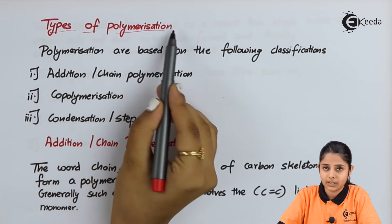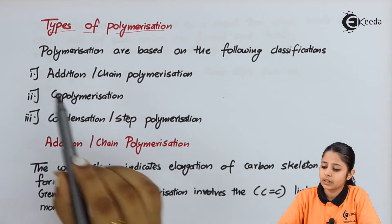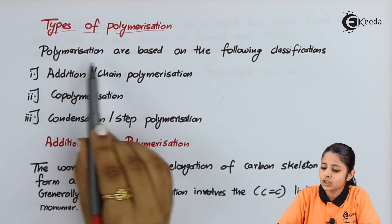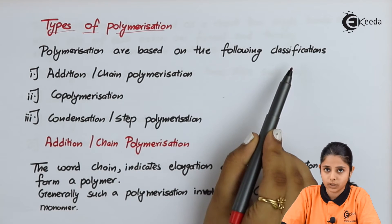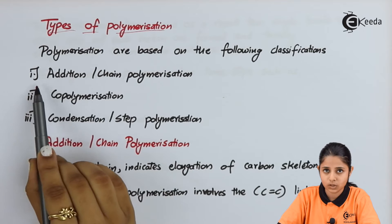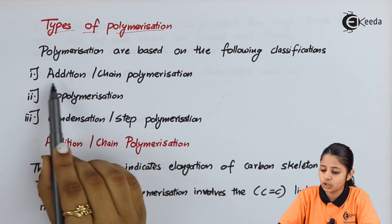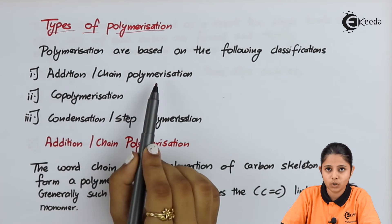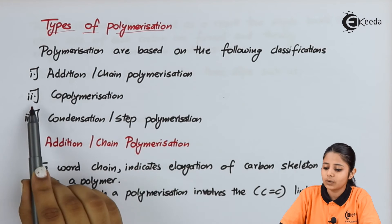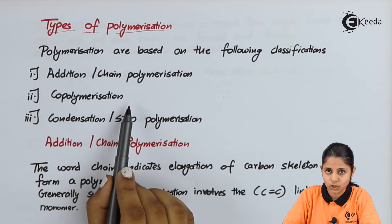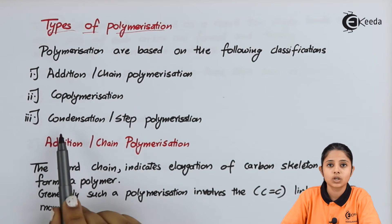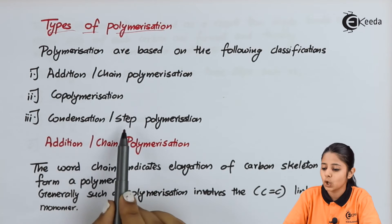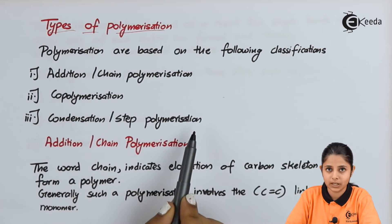Types of polymerization. Polymerization is based on the following classification: the first one is known as addition or chain polymerization, the second one is known as copolymerization, and the third one is known as condensation or step polymerization.